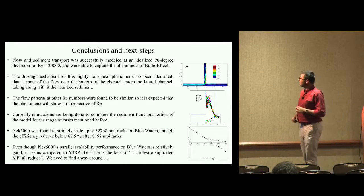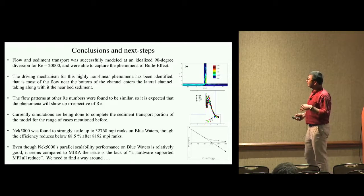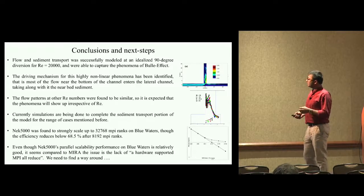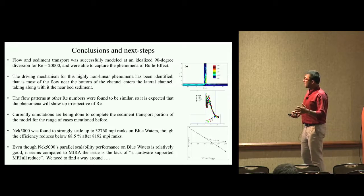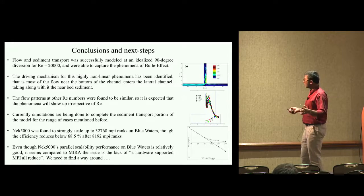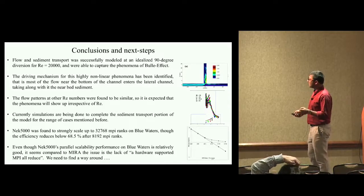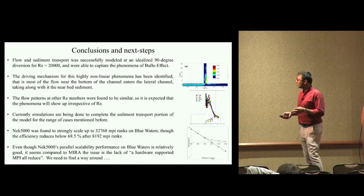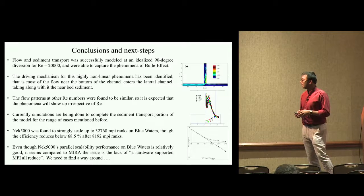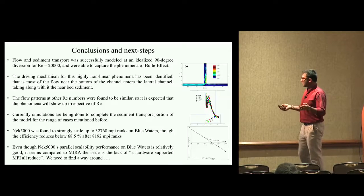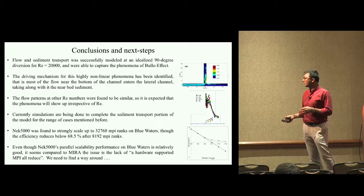The conclusions and next steps are: flow and sediment transport were successfully modeled at an idealized 90 degree diversion for bulk Reynolds number 20,000, and we captured the phenomena of Bulle effect. The driving mechanism has been identified: most of the flow near the bottom of the channel enters the lateral channel, taking along the near bed sediment. The flow patterns are similar for the whole range of Reynolds numbers. Currently, simulations are being done to complete the sediment transport. NEC was found to strongly scale to 32,768 MPI ranks on Blue Waters, though efficiency reduces to 68.5% after MPI rank of 8192. The issue compared to Mira is the lack of hardware supported MPI all-reduce.